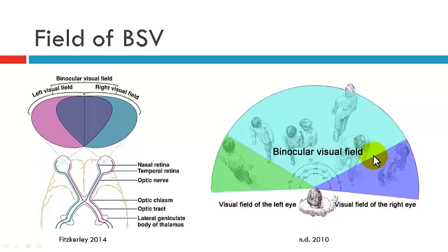The reason this is of interest in incomitant strabismus is because patients with incomitant strabismus often have an area of BSV. They'll have an area where they have double vision and an area where they have BSV. So what we're interested in mapping is which areas are diplopic and which areas the patient has BSV within, so that we can gain a better understanding of their binocular visual field.